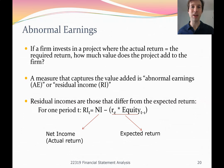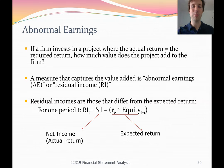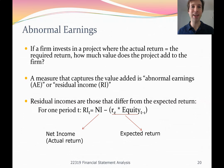Abnormal earnings, also called residual income, represent earning a return higher than your cost of capital. Businesses create value when they earn a return higher than their cost of capital. As a simple example: if I borrow money from a bank at 4% and invest it in another account also at 4%, I'm not creating any value — the interest earned is eaten up by the interest paid. To create value, I'd need to invest that money and earn a return higher than 4% — a positive spread.